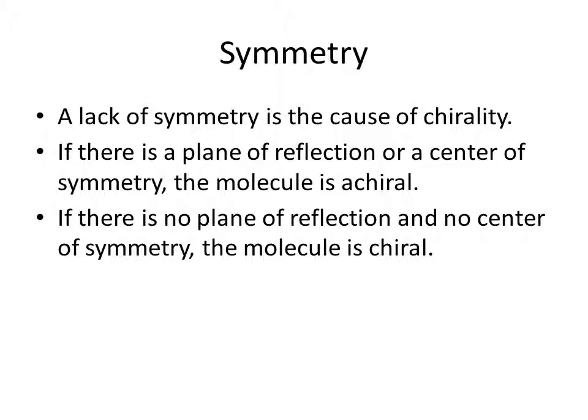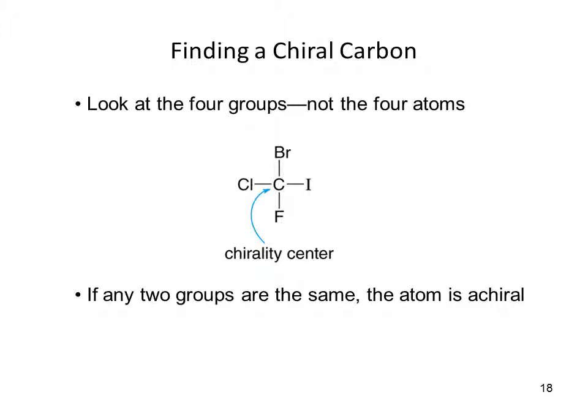When you have a plane of reflection where one side of the molecule is the same as the other, you have an achiral molecule or achiral carbon. To find a chiral carbon, you look at a carbon and look to see what groups — not just atoms, but groups — are attached. If any two groups are the same, the atom is achiral. If all four groups are different, then the atom is chiral. Looking at this molecule, you can see there are four different groups, so the atom is chiral.